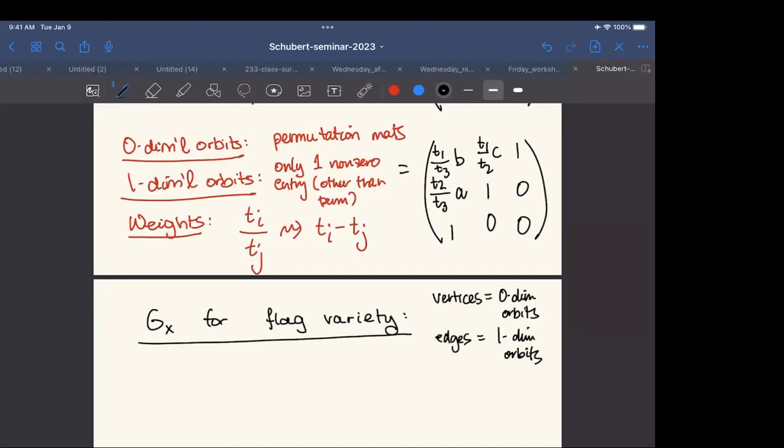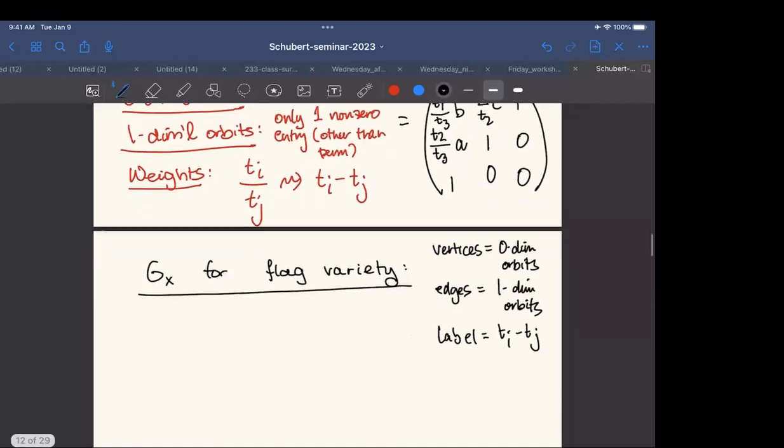The edges are the one-dimensional orbits. We can see in this example up here that if I take any one-dimensional orbit and then use my torus to shrink the variable A and make it as close to zero as I want, I can see there's one permutation flag in the closure of that one dimensional orbit. Conversely, if I use my torus to push the entry A really close to infinity, you can see it's having the effect of making the line look very much like the vector zero, one, zero. And the plane remains the same span of two vectors that it was, span of two permutation vectors that it was to begin with. So that's a hand-wavy way of saying that these edges are going to be connecting two permutation flags that differ by exchanging two of the columns. And then finally, the label. The label is going to be Ti minus Tj, where i and j are the two columns that were exchanged.